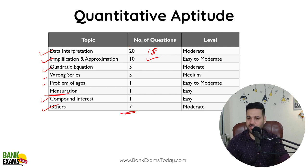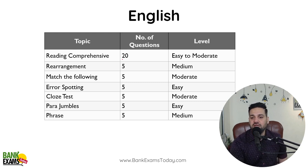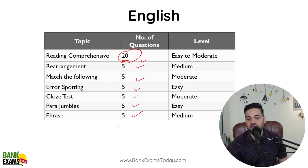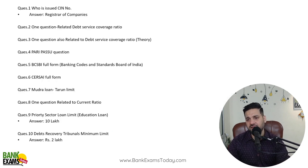In the English language section, there was a reading comprehension of 20 marks, rearrangement of 5 marks, match the following, error spotting, cloze test, para jumbles, and phrases. So basically it's common — the syllabus is standard for this section.